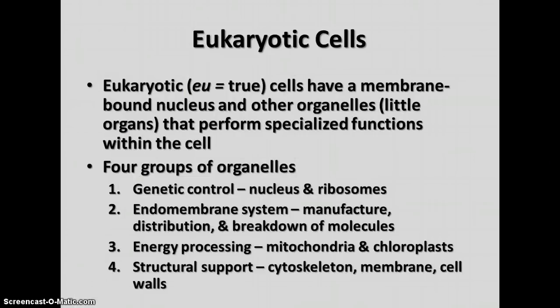Eukaryotic cells have a membrane-bound nucleus and other organelles that do specialized jobs inside the cell. These are divided into four main groups: organelles involved in genetic control (nucleus and ribosomes); the endomembrane system involved in manufacture, distribution, and breakdown of molecules inside the cell; energy-processing organelles including mitochondria and chloroplasts; and structural support structures including the cytoskeleton, membrane, and cell walls.